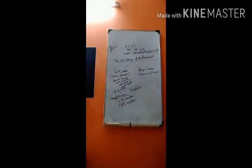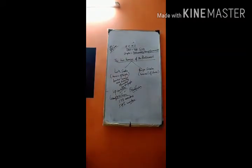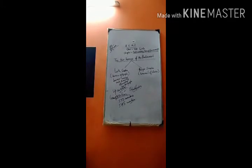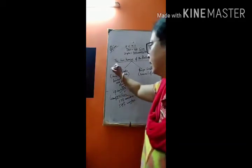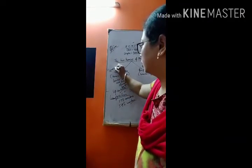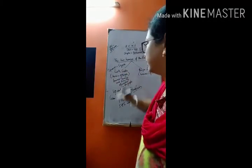Now, terms of the Lok Sabha. The Lok Sabha is elected for a term of 5 years. However, its tenure can be extended in case of an emergency. It can be dissolved even earlier if no party has a majority to form the government.